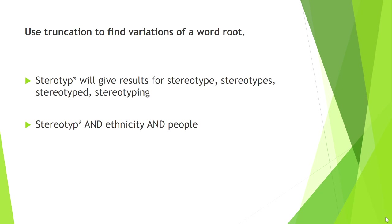We can use truncation to find variations of a word root. If you start to type in the word stereotype and then use the wildcard symbol at the end, this is going to give you results for different variations — you can get stereotype, stereotypes, stereotyped, stereotyping. Using this wildcard symbol, you can get results for all of these different forms of that word, and you would also get results for ethnicity and people, so it would give you all three.